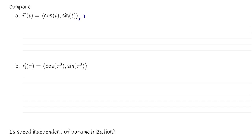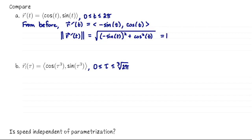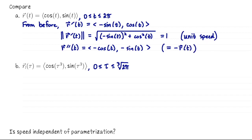Let's compare velocity, speed, and acceleration for these two parametrizations — the standard one and the reparametrization. For the original unit circle parametrization, the velocity is negative sine of t, cosine of t; speed is always 1 (a unit speed parametrization); and the acceleration vector equals negative r of t, pointing directly back toward the origin.